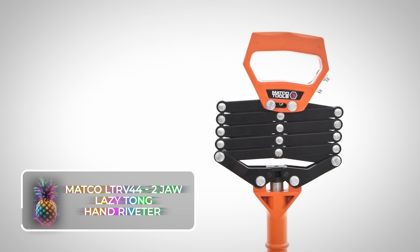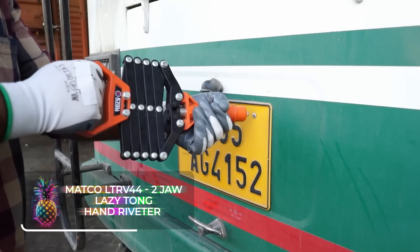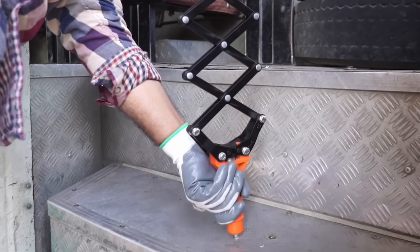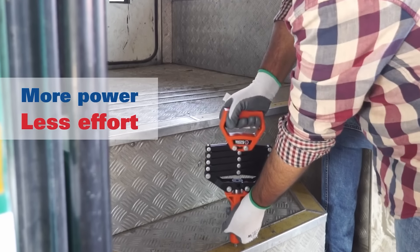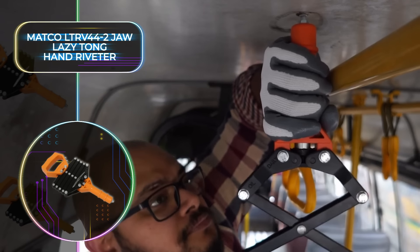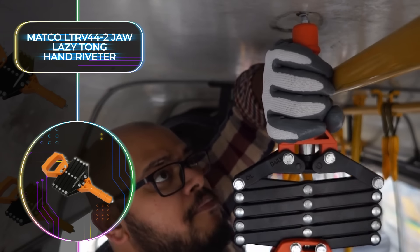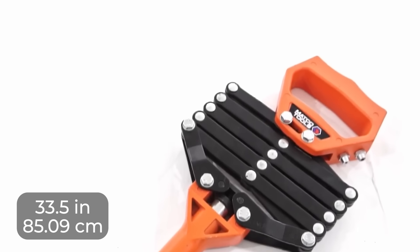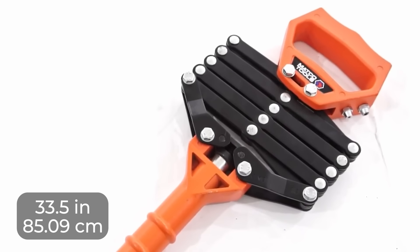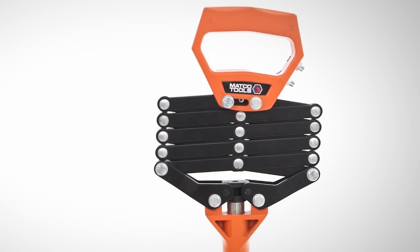Matco LTR V44 Two Jaw Lazy Tong Hand Riveter. Unlike traditional riveters, this version from Matco is a little bit more advanced and has been made with the distinct goal of powering through long hours of use without failing the user even once. It has a wonderfully lightweight, compact shape and design, weighs just six pounds, and is a mere 33.5 inches or 85.09 centimeters long.